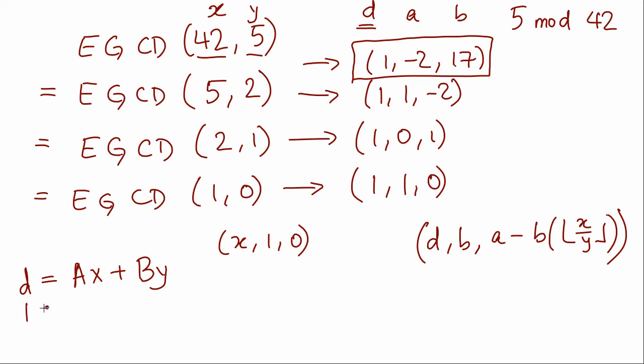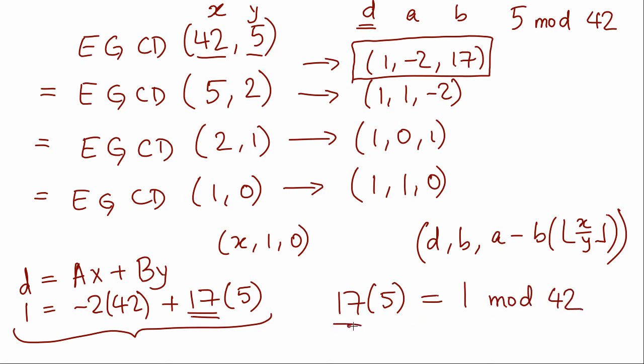So we get 1 equals... and as it turns out, 17 is the inverse of 5 mod 42. We can see that by just taking the mod 42 of this whole equation. We get 17 times 5 is 1 mod 42, which clearly shows that 17 is the inverse of 5 mod 42.